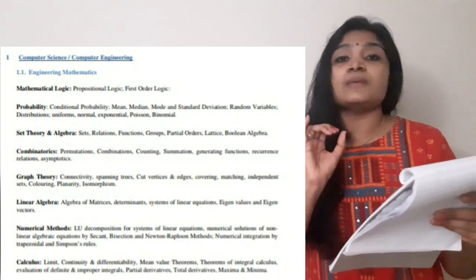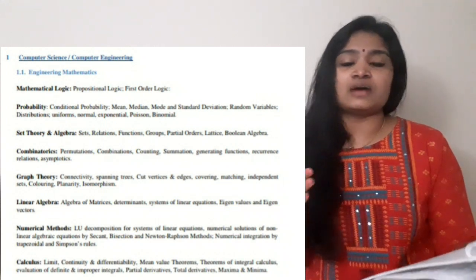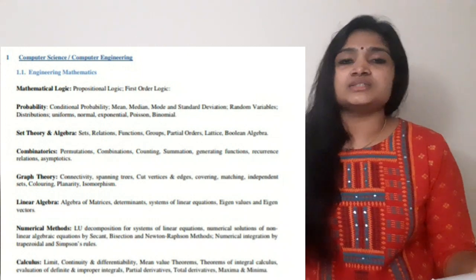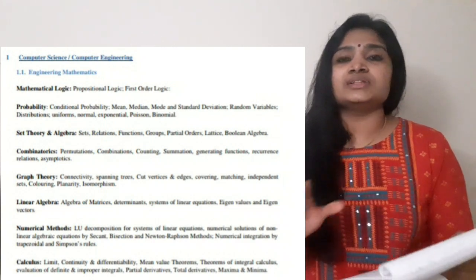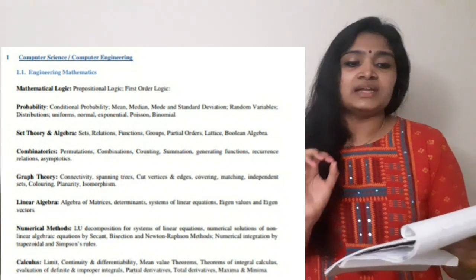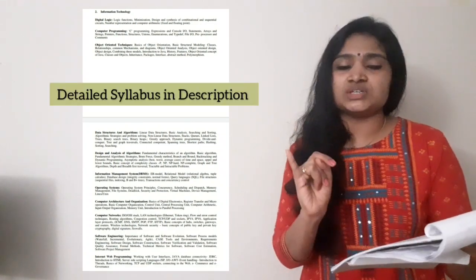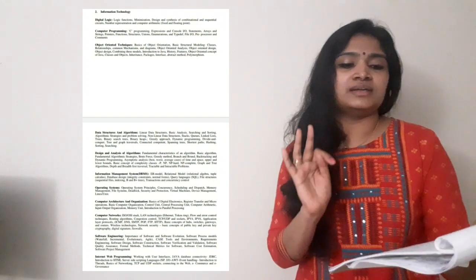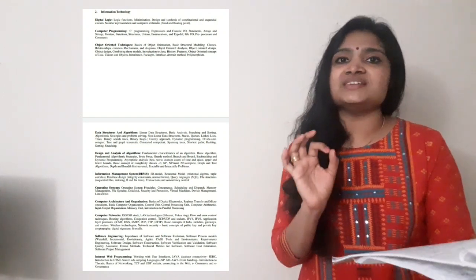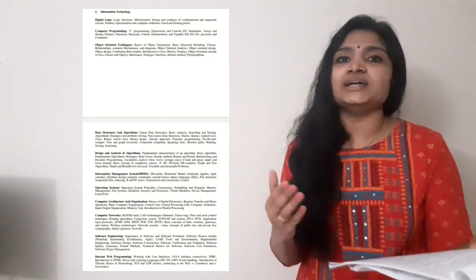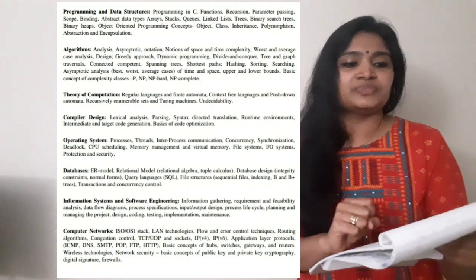For the IT branch, Engineering Maths is the same — mathematical logic, probability, set theory, graph theory, permutation and combination, linear algebra, numerical methods, and calculus. Engineering Maths is common for all three branches. The IT-specific subjects are: digital logic, object-oriented programming, computer programming, data structures, algorithms, design and analysis of algorithms, DBMS, operating systems, computer organization and architecture, computer networks, and software engineering.